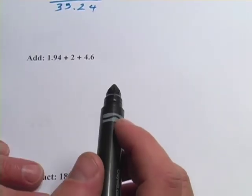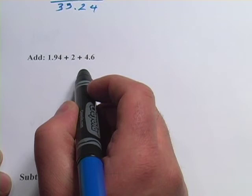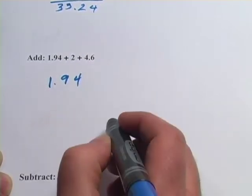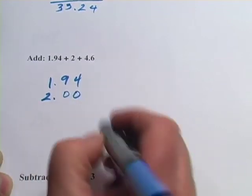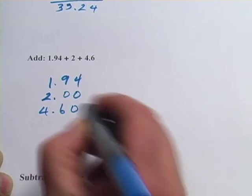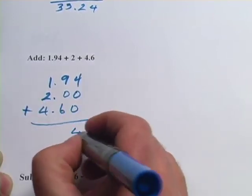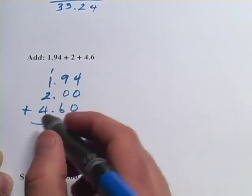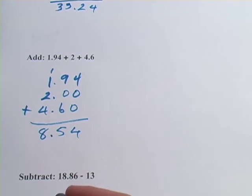Let's try another one. This one says add 1.94 plus 2 plus 4.6. So I'm going to stack them up again, lining up the decimal points: 1.94, 2 point, and I'll fill in with trailing zeros, and then 4.6 with another trailing zero there. And then we just add: 4, 9 and 6 is 15, 1 and 1 is 2, and 2 is 4, and 4 is 8, so 8.54.